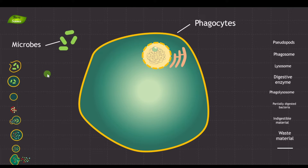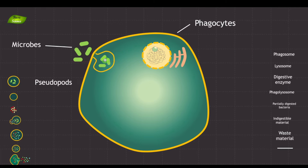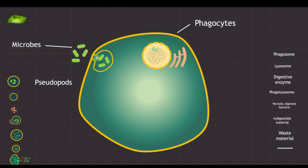Now let's understand what happens inside the phagocyte. The microbes come into close contact with the phagocyte, and then the cell internalizes them. There is folding of the membrane around these cells, and those structures are known as pseudopods. I need to create the pseudopods in the illustration, and as you can see it is forming a structure around the bacterial cells — the bacterial cells are now being internalized.